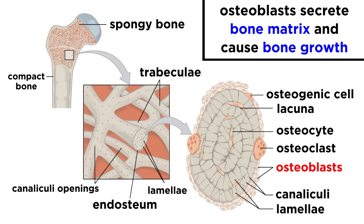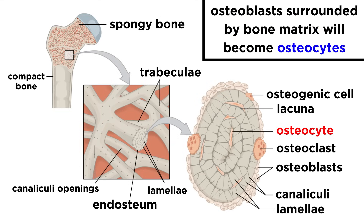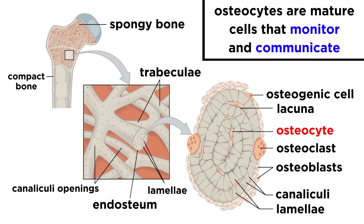Next are osteoblasts. These are the ones that secrete the bone matrix that consists of collagen and other proteins, meaning they are responsible for bone growth. These are also actively mitotic and cube-shaped while active. Once surrounded by matrix, they become our next type of cell, osteocytes. These are mature bone cells that monitor and maintain the bone matrix, communicating this information to other cells.